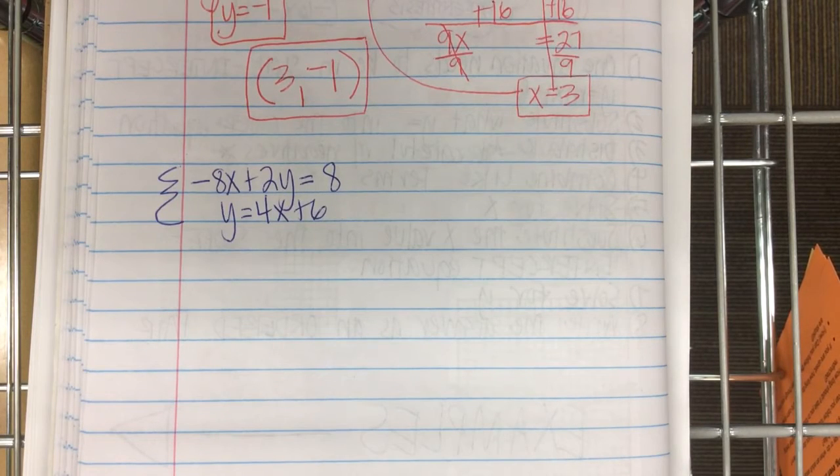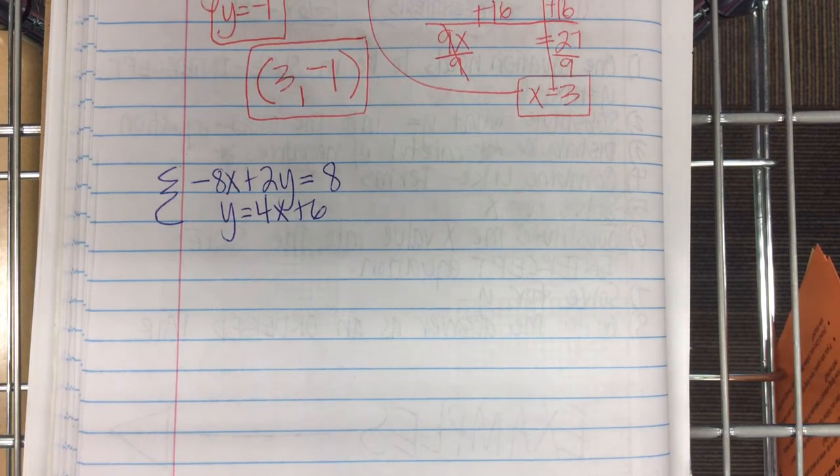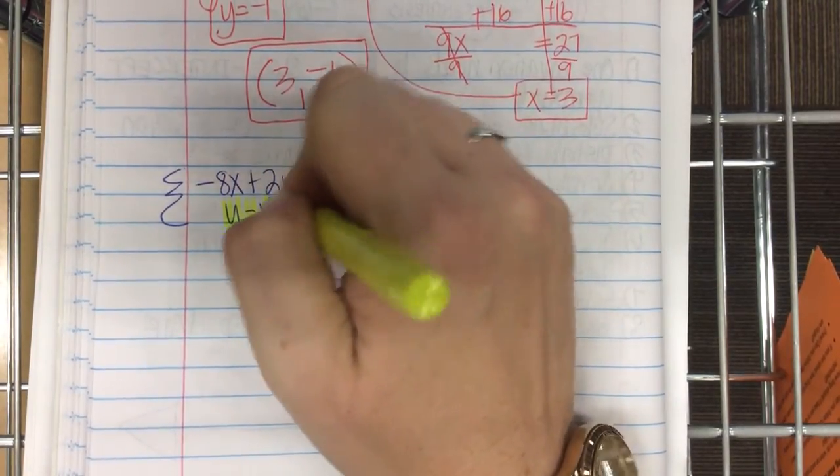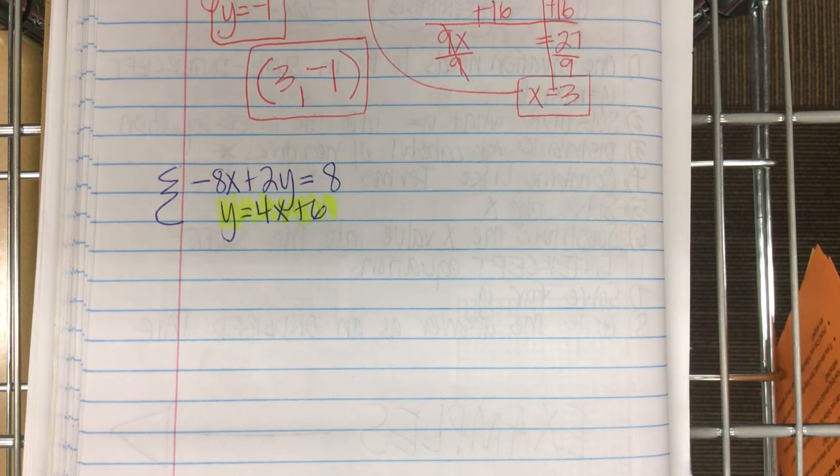Try this system. Negative 8x plus 2y equals 8. Which one are we substituting? Do we have one in y equals? Yeah. The bottom. This time it happens to be on bottom. If there wasn't one in y equals, you'd have to make it into y equals, which is okay.